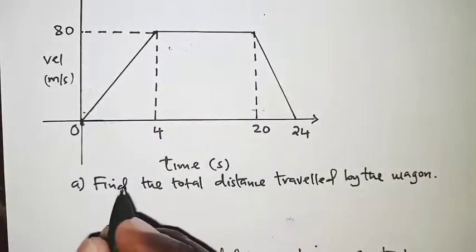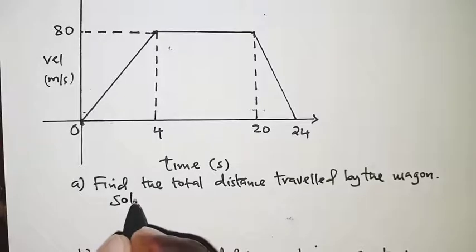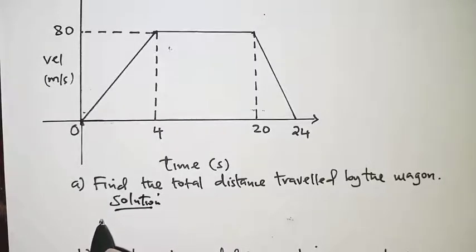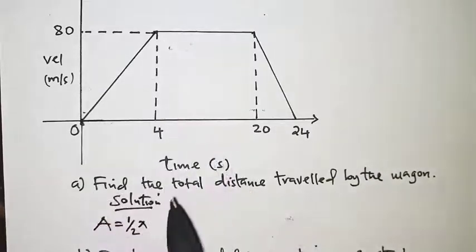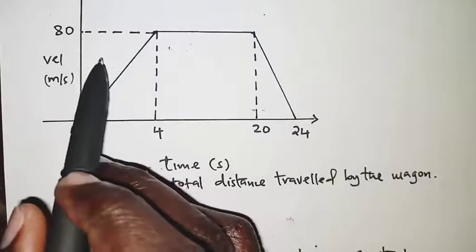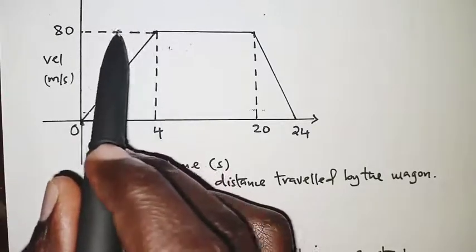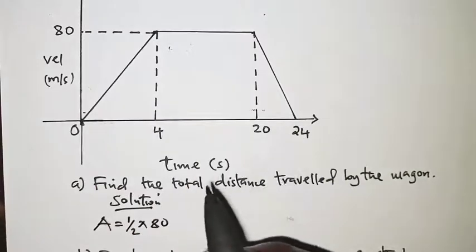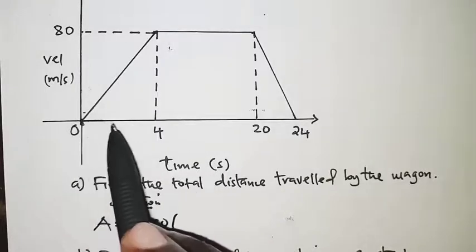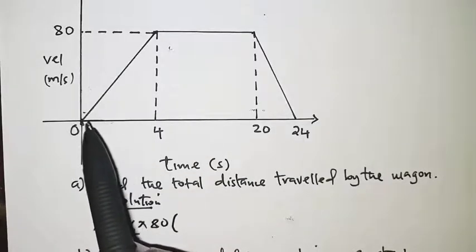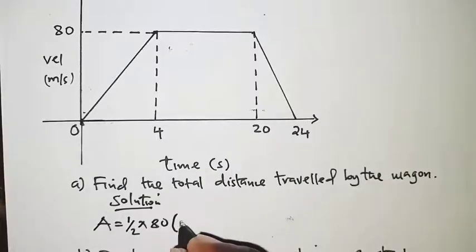The solution to this would be area of a trapezium is one-half times the height. The height of this trapezium is 80, as you can see from this particular point, the maximum velocity. So we have one-half times the height, 80, into brackets, the sum of the two parallel sides.